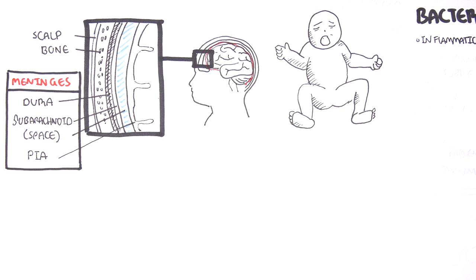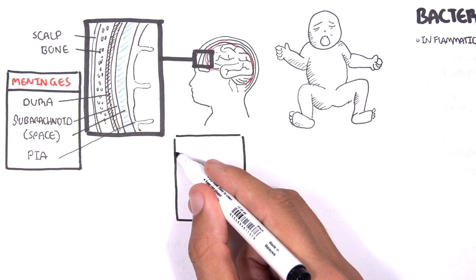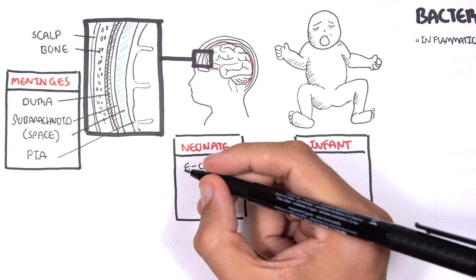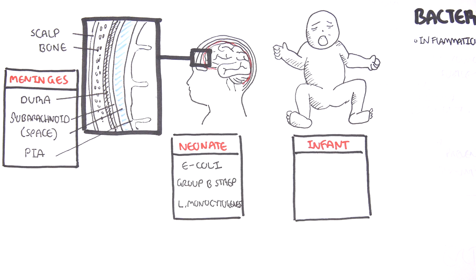Common causes of bacterial meningitis in the newborns, in the neonates, are E. coli, group B streptococcus, and Listeria monocytogenes. Group B streptococcus and E. coli can be obtained from the mother during delivery when the baby is delivered through the vagina.